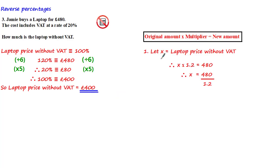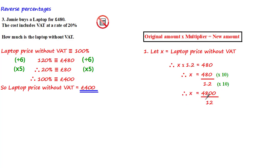We could also solve this using the multiplier method. If we let x equal the laptop price without VAT, then x times by 1.2 — the equivalent multiplier for a 20% increase — equals £480. To get x we divide both sides by 1.2. Since this is a non-calculator question, we multiply numerator and denominator by 10 to get 4800 over 12. Since 12 goes into 48 four times, x equals £400 — the same as before.